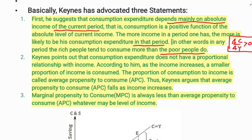The second statement: Keynes pointed out that consumption expenditure does not have a proportional relationship with income. That is, if income increases by 50 percent, consumption does not increase by 50 percent in the same proportion. According to him, as income increases, a smaller portion of income is consumed.